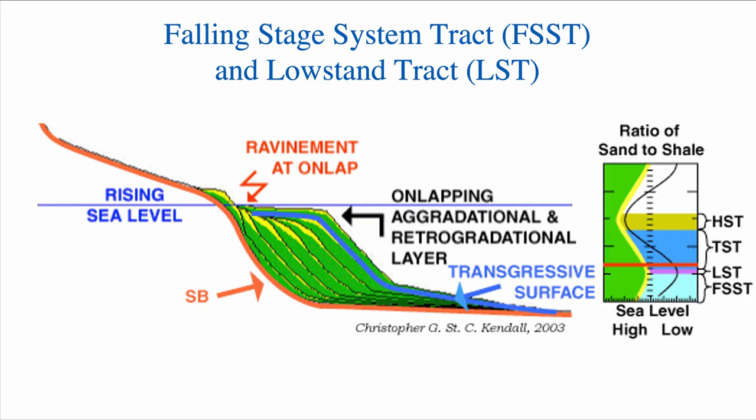The falling stage system tract, or FSST, represents the time when base level is falling — from maximum sea level to minimum sea level — whereas the lowstand tract refers to when base level is at its minimum.